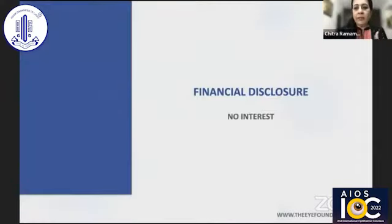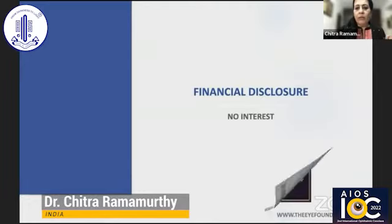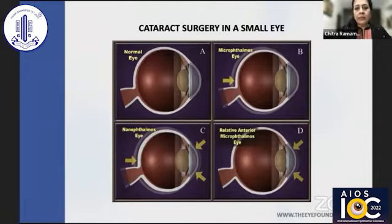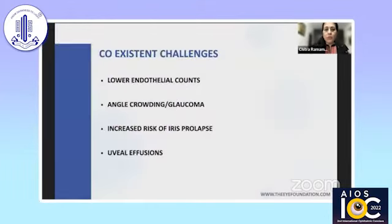For the anatomical configuration of these eyes, the proximity of all structures and the shared micro-circulation means any impact on one affects the other. These eyes could be a normal small eye with normal anterior chamber depth and normal axial length; a micro-ophthalmic eye where anterior chamber depth is normal but axial length is smaller; a nano-ophthalmic eye where both anterior chamber depth and axial length are small; or a relative anterior micro-ophthalmia where anterior chamber depth alone is smaller but axial length is normal.